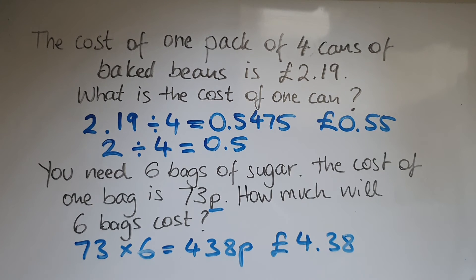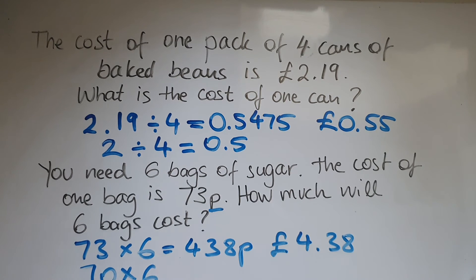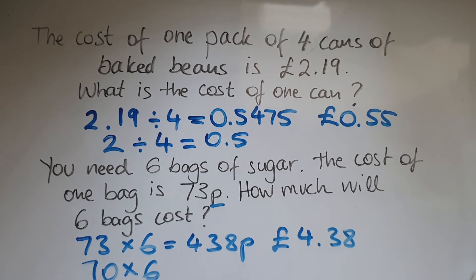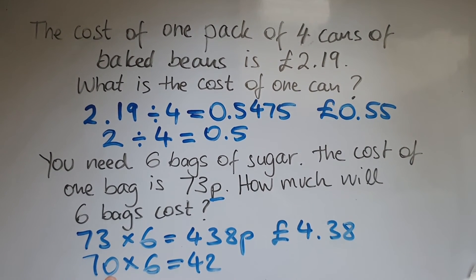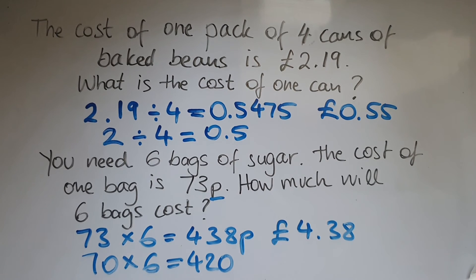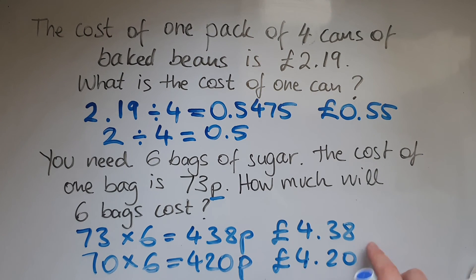How could I have estimated this? 73 pence — I could have rounded that to 70 pence, because I can do 7 times 6 very easily, and that gives me 42. I then add the zero, which is the same as multiplying by 10, so that's 420 pence, which is £4.20 — very close to what we had.